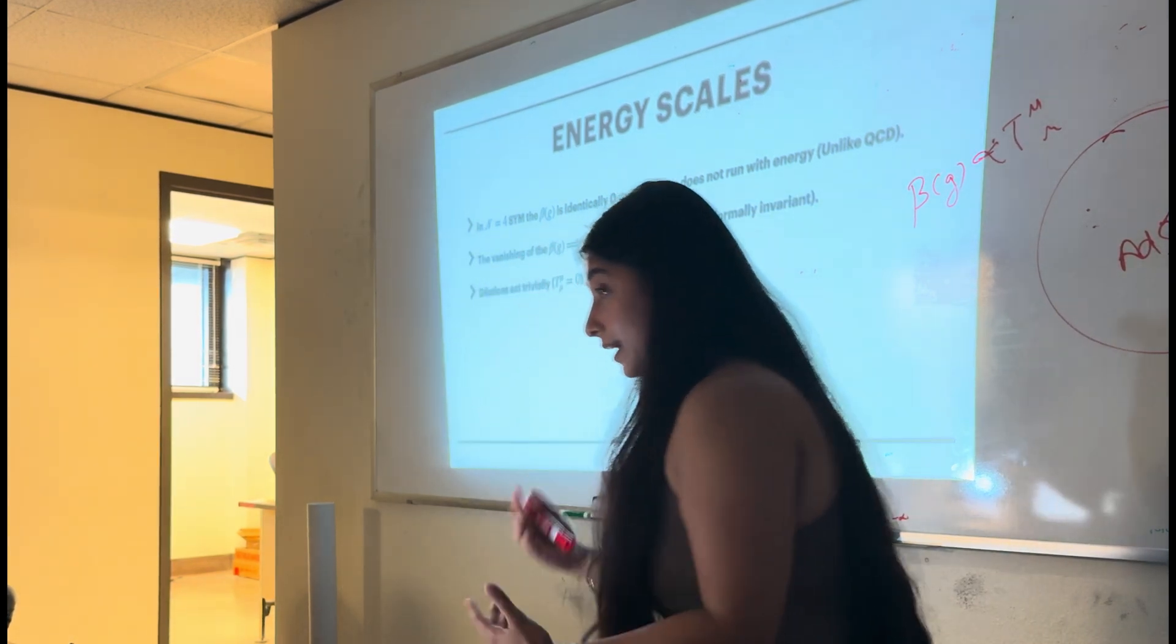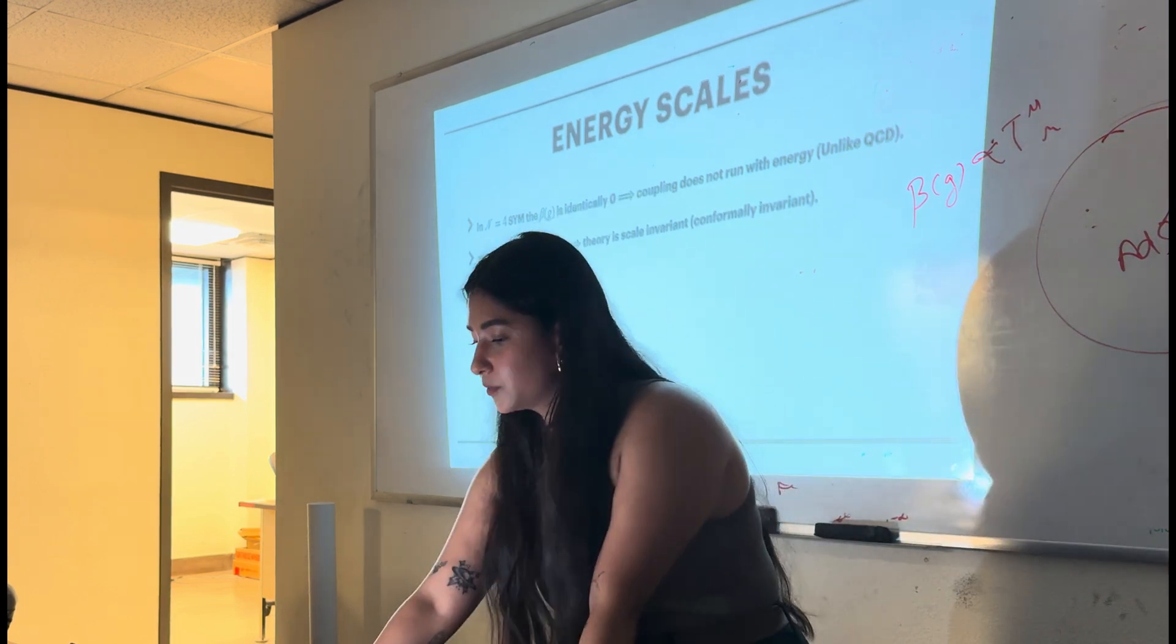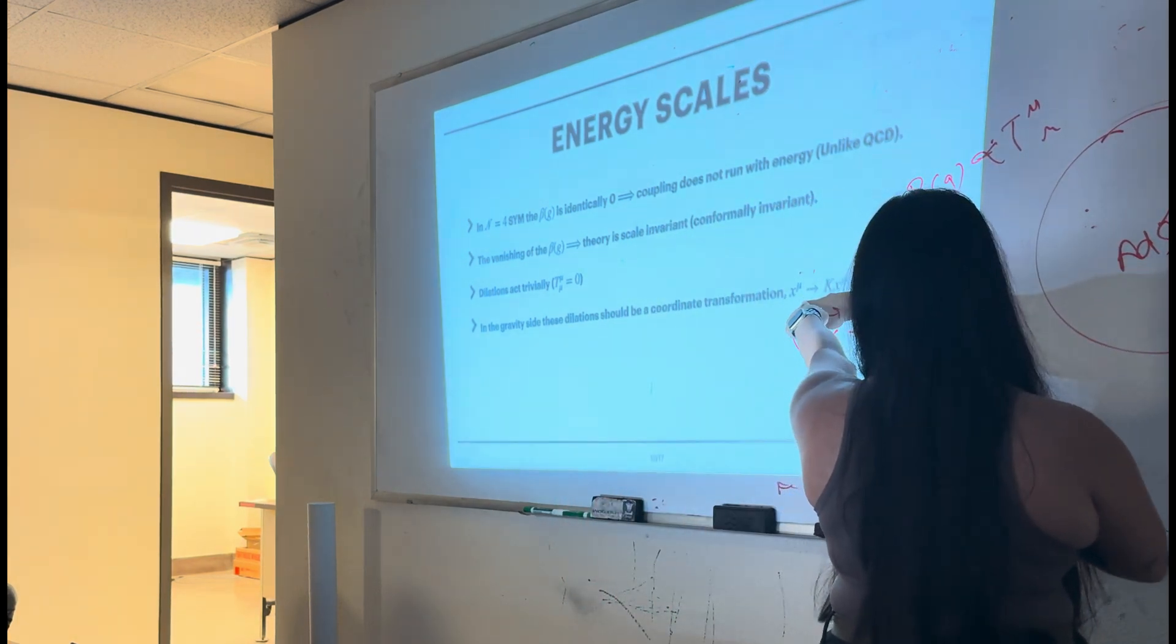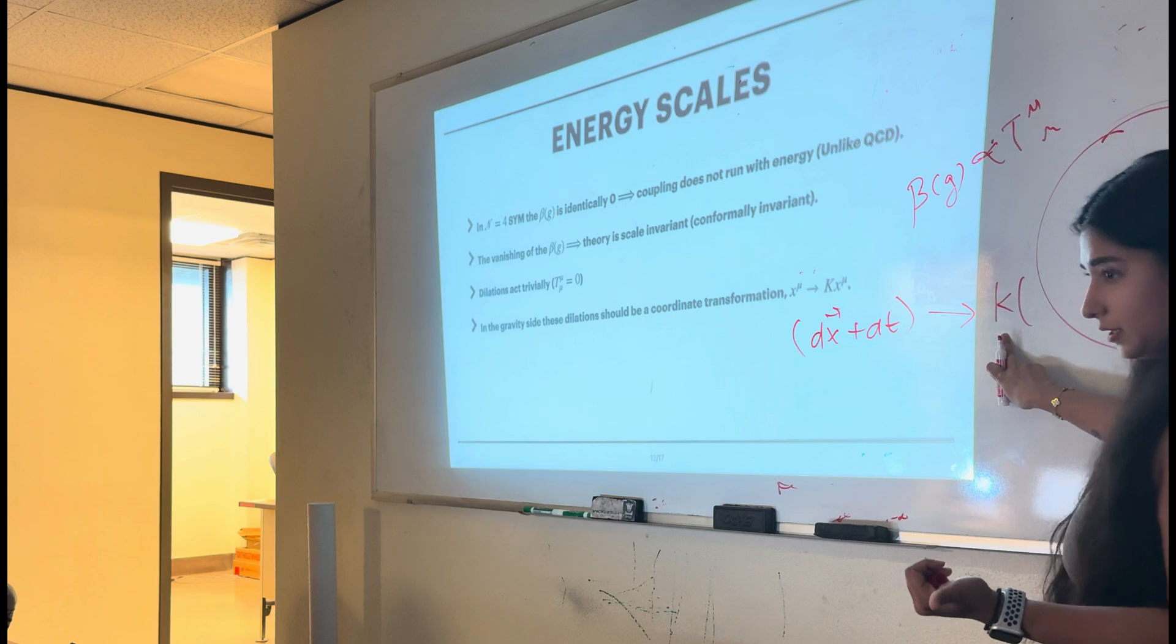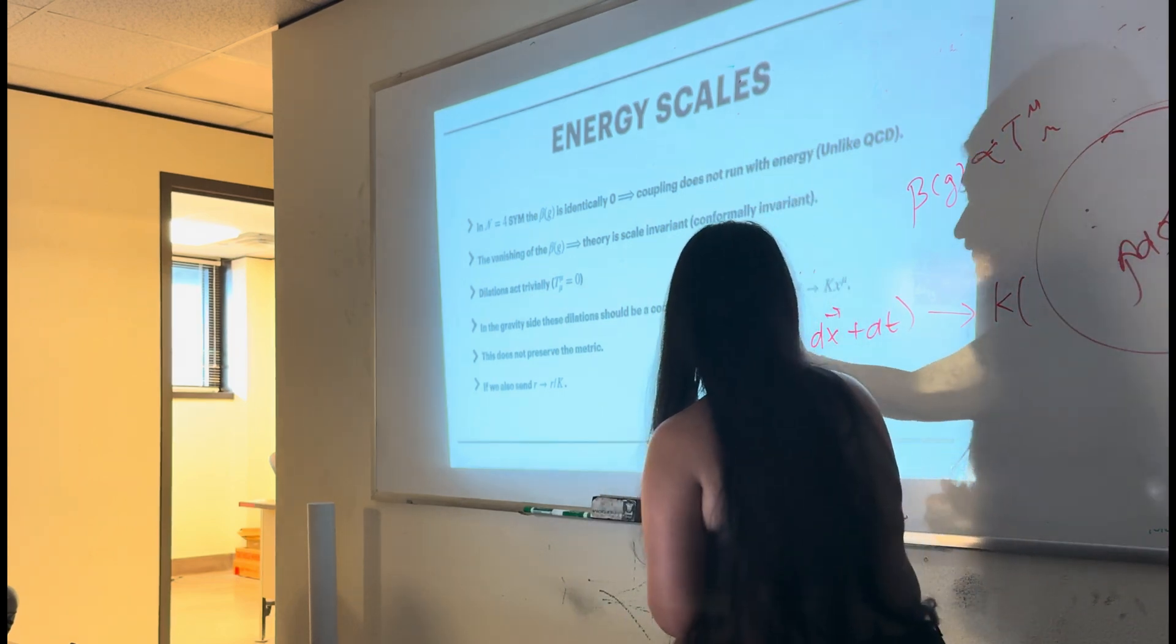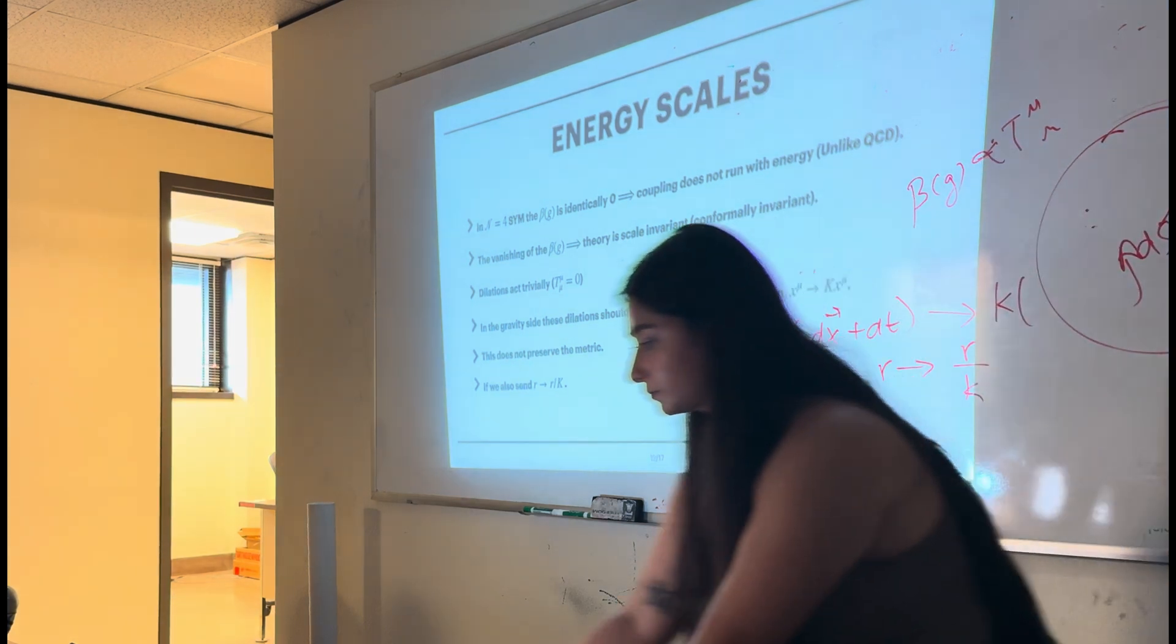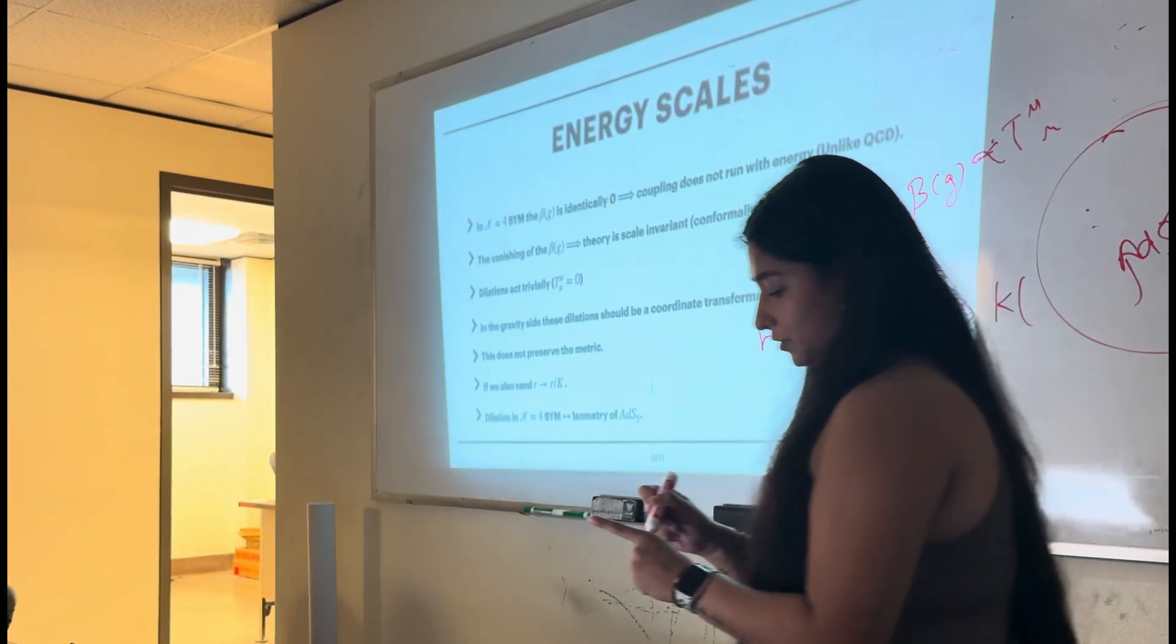Now, if you go to the dual theory, one would think that these dilations would act like a coordinate transformation that look like this. On the other hand, in our metric, if X^μ where μ is 0 to 3, if we change and it gets an overall factor, our metric will not be invariant. So, what do we do? To preserve our metric, we can also send R, which was a factor here, to R over K. So, if this is K by K, this is K by 1 over K, then our metric is preserved. This is called isometry of AdS5. So, dilations in our QFT is mapped to isometry of AdS5.